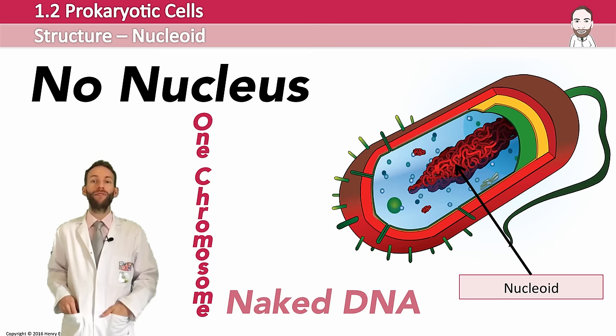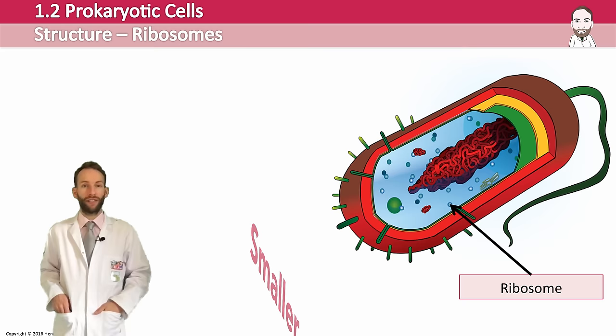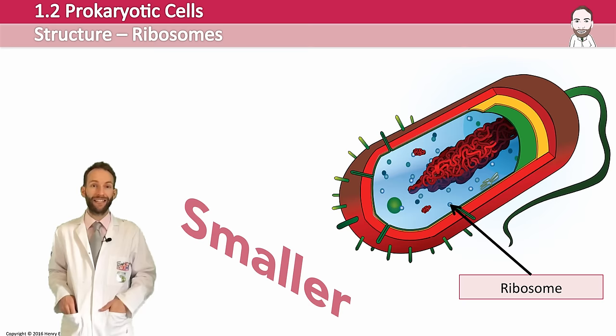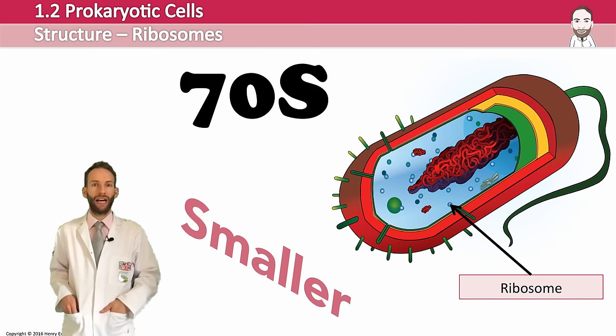Prokaryotic cells also have ribosomes, like eukaryotic cells, but there is a difference: they're actually smaller than the ribosomes found in eukaryotic cells. They are 70S ribosomes, rather than the 80S ones found in eukaryotic cells, and these are made up from a 30S and a 50S subunit. Their function is the same as in eukaryotic cells, which is protein synthesis.